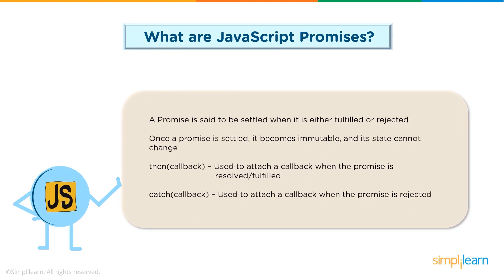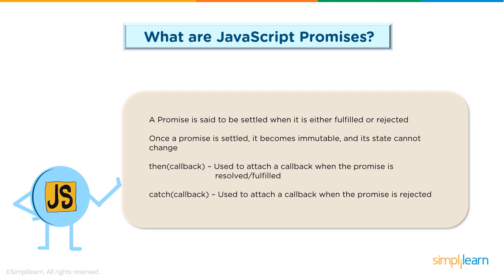A promise is said to be settled when it is either fulfilled or rejected. Since promises are immutable, they cannot change their state — once fulfilled or rejected, they are settled. When a promise is fulfilled, we make use of the then() method, which runs for a result and attaches a callback when the promise has been resolved. Similarly, when the promise is rejected, it makes use of the catch() method, which attaches a callback when the promise has been rejected.